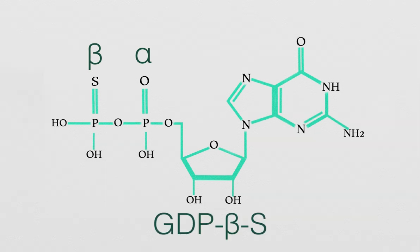Conversely, researchers can add GDP beta-S, a GDP molecule with a sulfur in place of an oxygen, in its second phosphate group.